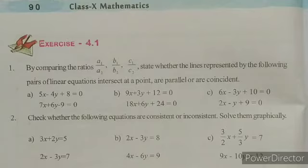By comparing the ratios a1 by a2, b1 by b2, c1 by c2, state whether the lines represented by the following pair of linear equations intersect at a point or are parallel or are coincident.